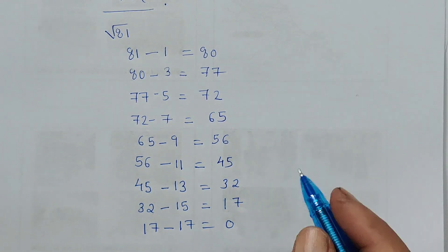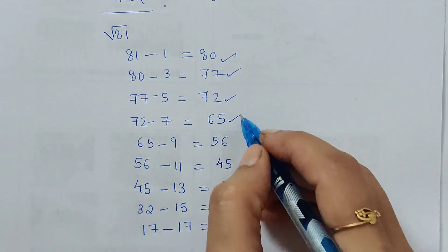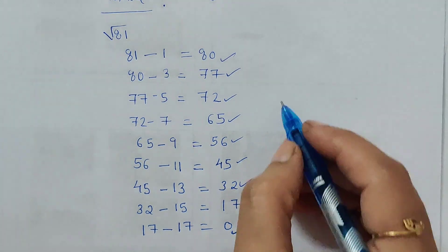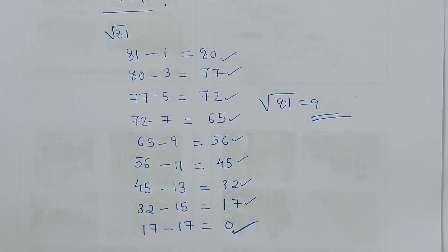So what does it mean? In how many steps did we get this answer as 0? 1, 2, 3, 4, 5, 6, 7, 8, 9. So square root of 81 is 9. Thank you and have a nice day.